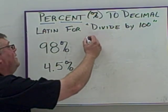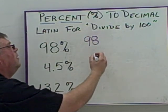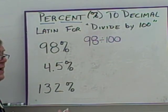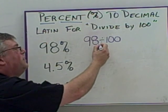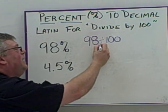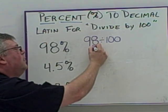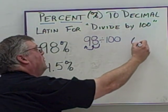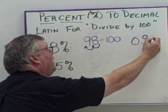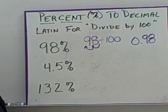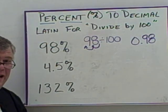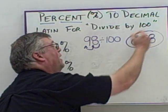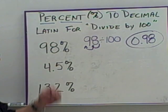So we take 98 and divide it by 100. When you're dividing by 100, it's the same as moving the decimal point two place values to the left. This becomes 0.98. You shouldn't need a calculator to do that — moving the decimal point two places gives you the decimal equivalent of 98%.